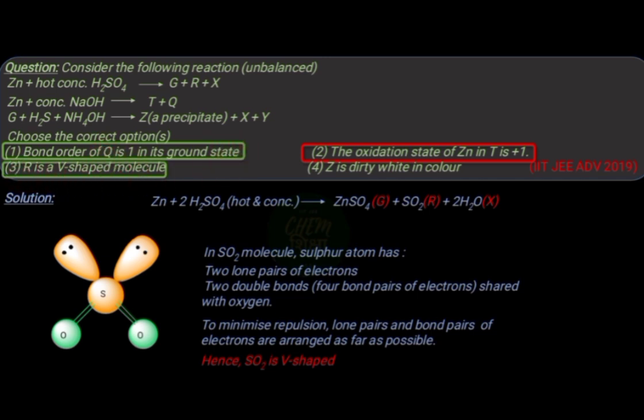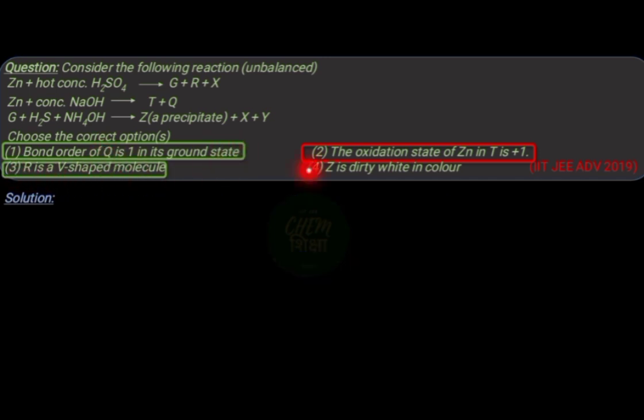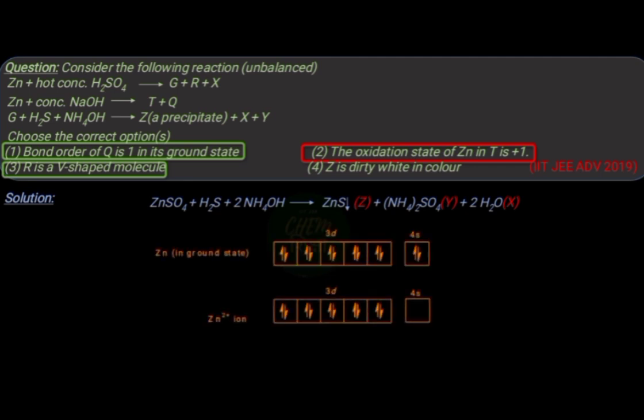Now consider option 4, in which we have to tell the color of molecule Z, that is zinc sulfide. All zinc solids are white in color due to no unpaired d electrons in zinc atom or Zn2+ ions, and thus no d-d transition. So the statement in option 4 is also correct. Thank you.